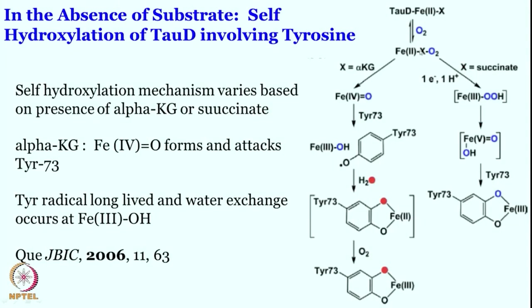The answer, as briefly mentioned, is yes — phenol is going to participate in the reaction. Let us look once again at the same reaction mechanism: it forms an iron(II)-oxygen intermediate, and subsequently with the help of alpha-KG we see that the iron(IV)-oxo intermediate forms. This iron(IV)-oxo intermediate can then react with tyrosine if the required aliphatic organic substrate is not present. You get a phenoxy radical intermediate and a tyrosine radical intermediate, along with iron(III)-hydroxo formation.